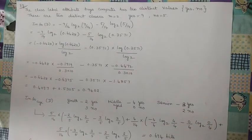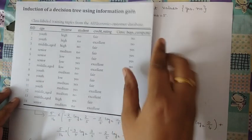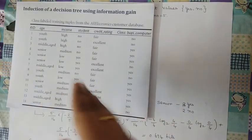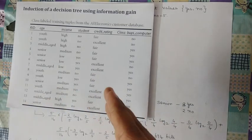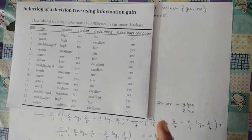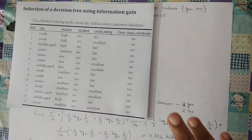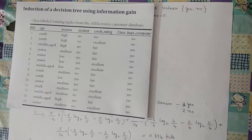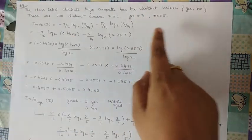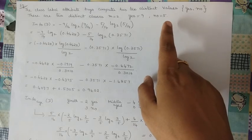Here is the table we are going to consider. It has attributes like age, income, credit rating, and student, and a final column called the class label — 'buys computer' — which has two distinct values: yes and no. When I count, I have 9 yes's and 5 no's, for a total of 14 transactions.